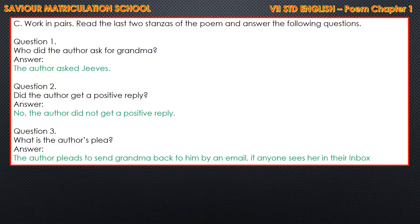Section C — work in pairs. Read the last two stanzas of the poem and answer the following questions. Question 1: Who did the author ask for grandma? Answer: The author asked Jeeves. Question 2: Did the author get a positive reply? Answer: No, the author did not get a positive reply. Question 3: What is the author's plea? Answer: The author pleads to send grandma back to him by an email if anyone sees her in their inbox.